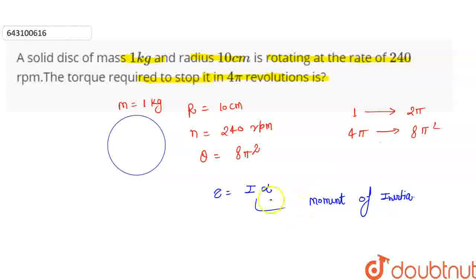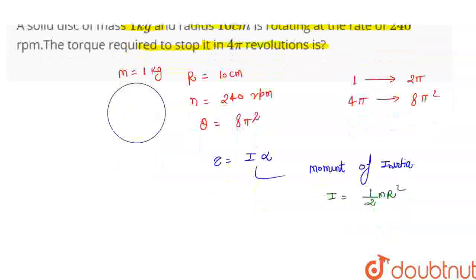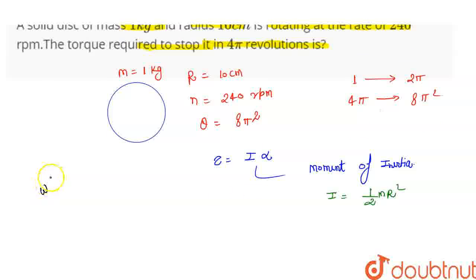This is a solid disk, so the moment of inertia is half m r squared. And we need to calculate alpha. Using the rotational kinematics third equation: omega final squared equals omega initial squared plus 2 alpha theta.